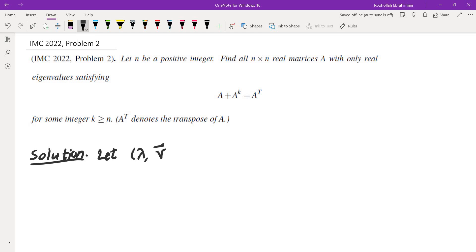I started with taking an eigenpair. So let lambda comma V be an eigenpair of A. What we know is that if I multiply both sides by V, I would get A V plus A to the K V is equal to A transpose V.